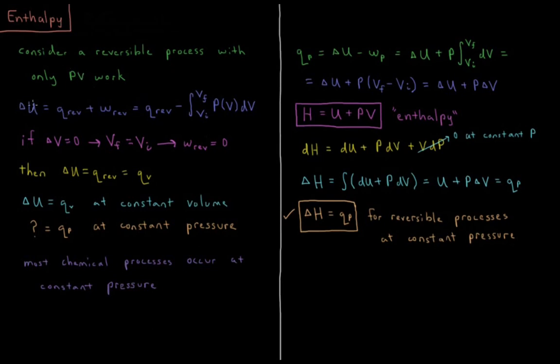The change in the internal energy of our closed system, delta U, is equal to the heat plus the work that are exchanged with the surroundings, reversible in this case. So delta U equals Q_rev plus W_rev, where that equals Q_rev minus the integral from V_initial to V_final of the external pressure as a function of volume with respect to volume.